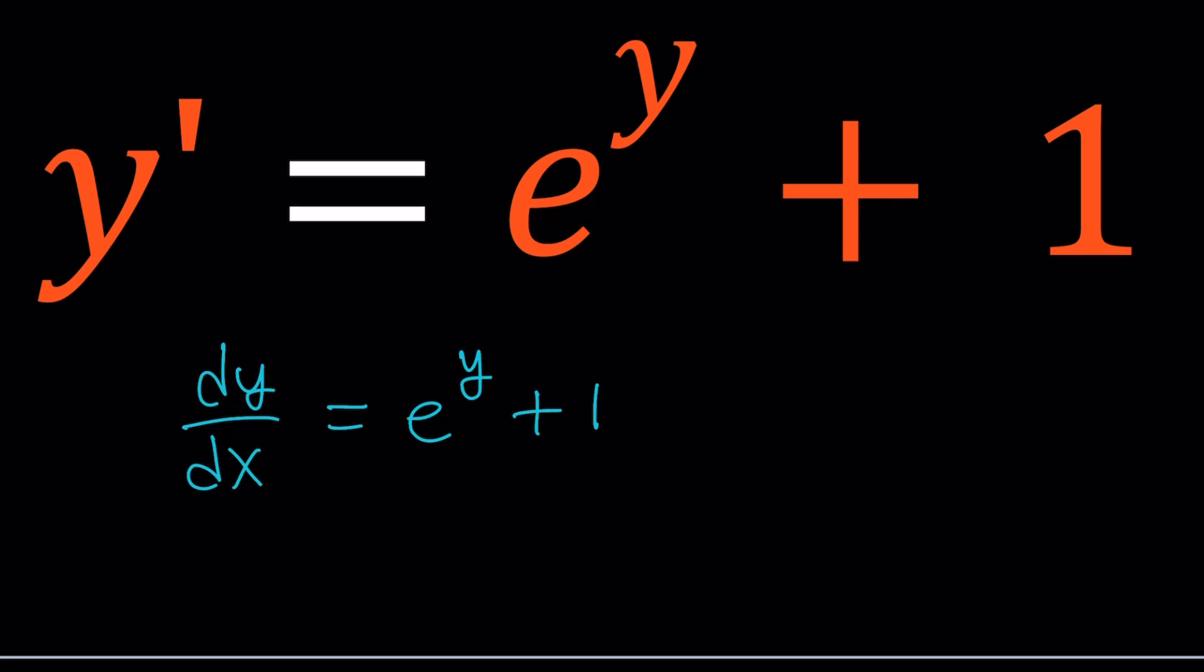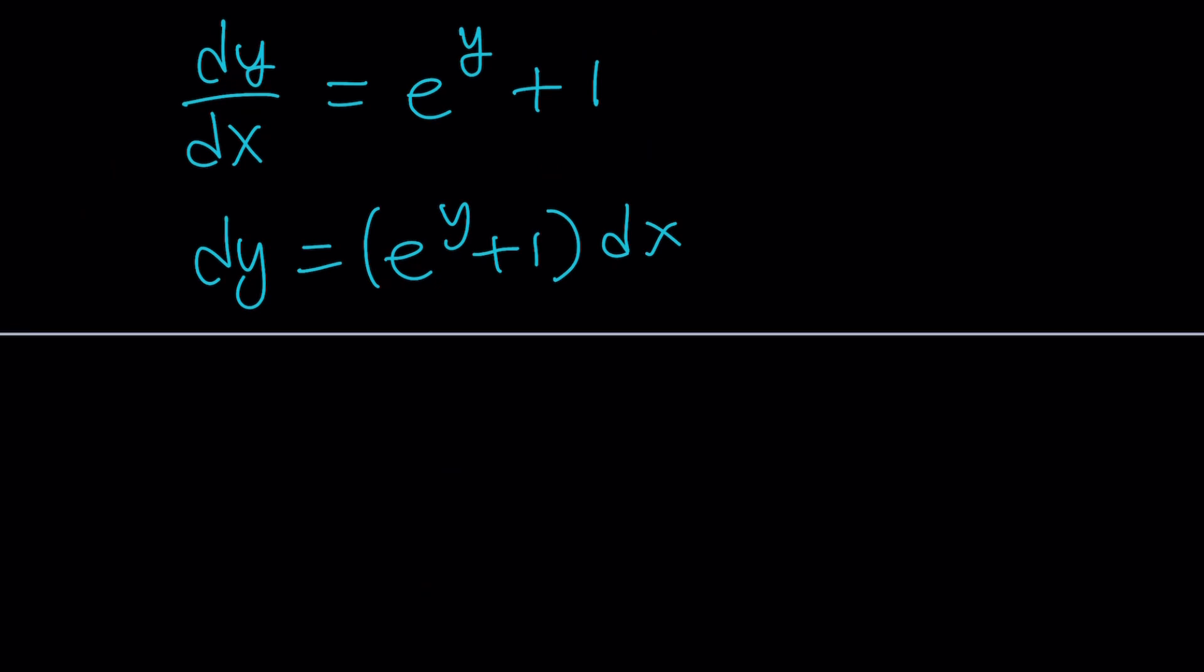So let's go ahead and see what we can do. Multiply both sides by dx. And then, of course, you want to put the y's together, so let's divide by e to the y plus 1. You could do that at the same time, by the way. So now we got this separable, or it was separable. We separated the variables. Now let's go ahead and integrate both sides.